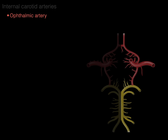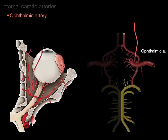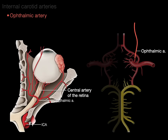One of the branches coming off the cerebral part is the ophthalmic artery, which, as its name implies, goes to the eye. In a superior view of the orbit, the ophthalmic artery goes through the optic canal and gives rise to arteries supplying the orbit. Clinically important is the central artery of the retina, which provides arterial supply to the retina — if occluded due to diabetes or a clot, blindness or vision problems occur.